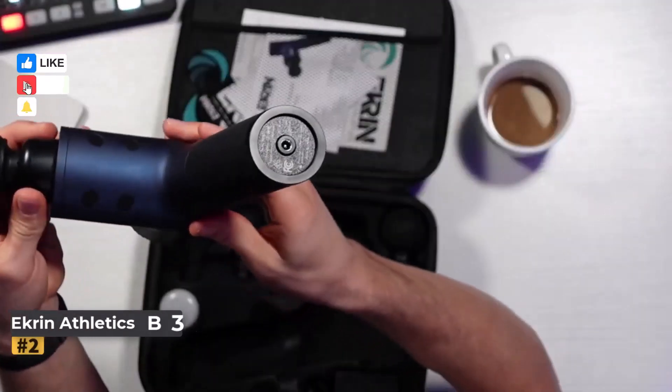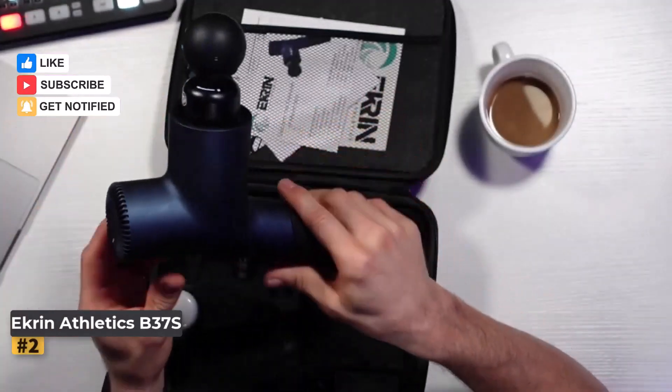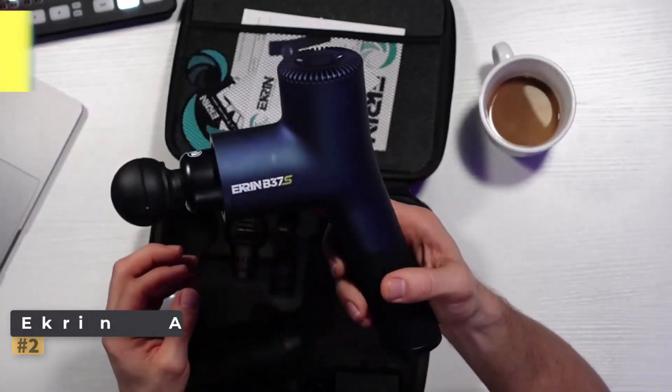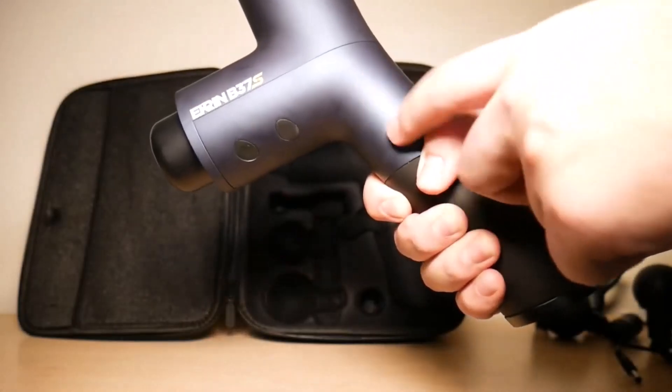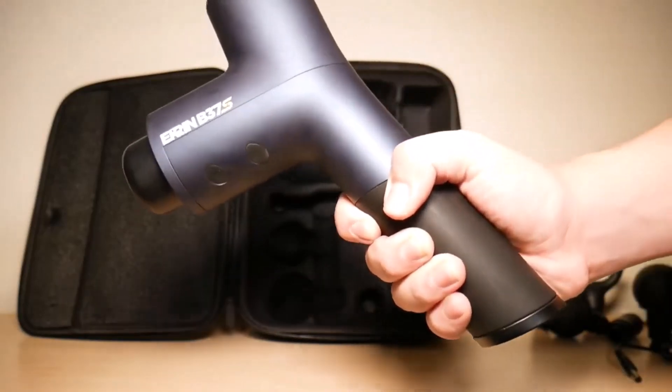Number 2. Ekrin Athletics B37S. This massager stands out with an impressive 8-hour battery life, the longest among the massage guns in this list. It offers 5 adjustable speeds, ranging from 1,400 to 3,200 percussions per minute, and delivers up to 56 pounds of deep percussive force to tackle stubborn knots. With 6 head attachments, it provides versatile options for different needs.